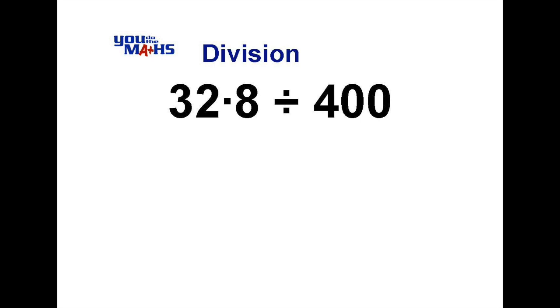When dividing by a multiple of 10 or a hundred or a thousand, etc., what we need to do is look at it in two parts. What we'll do is we'll consider the 400 as two parts: a 4 and a 100.